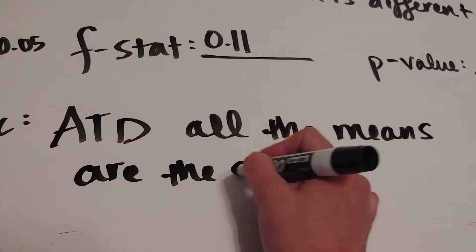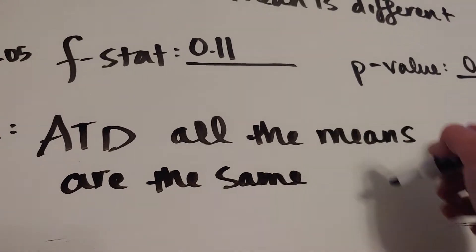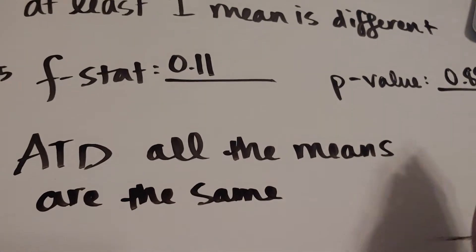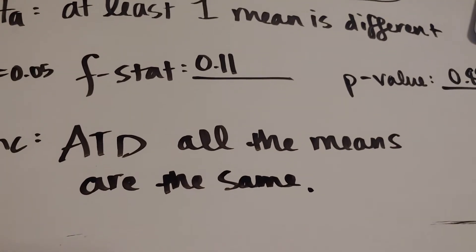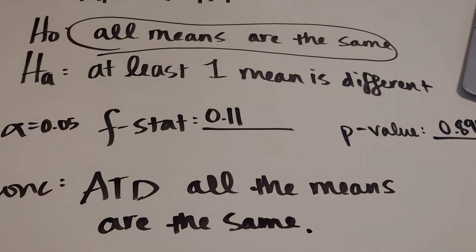Now, if you don't like to say it that way, you could also say all the means are close enough to be considered statistically the same, but that is good enough. So that is our second fast example.